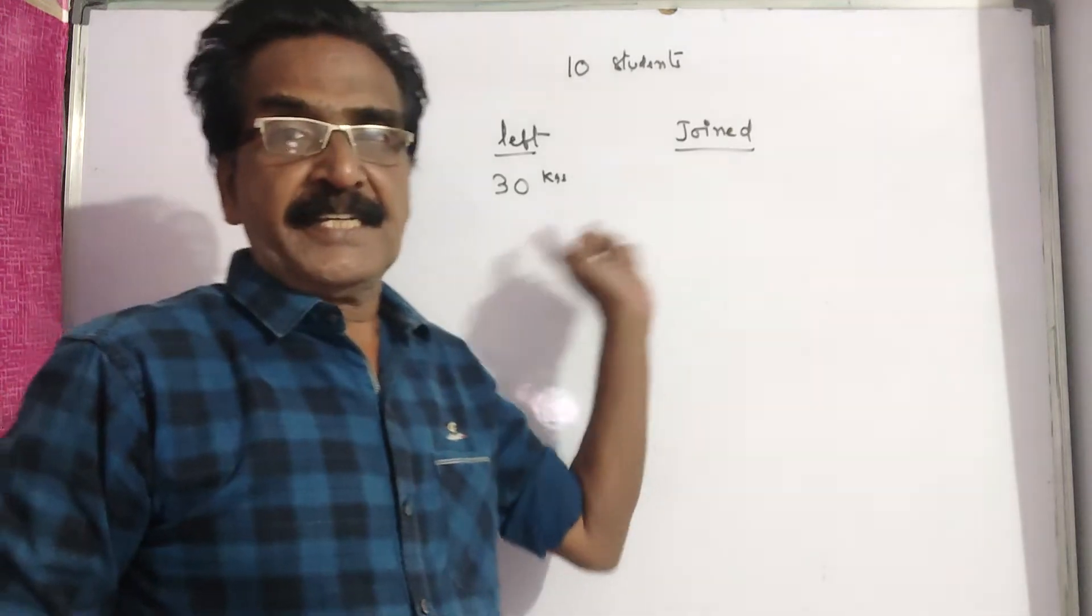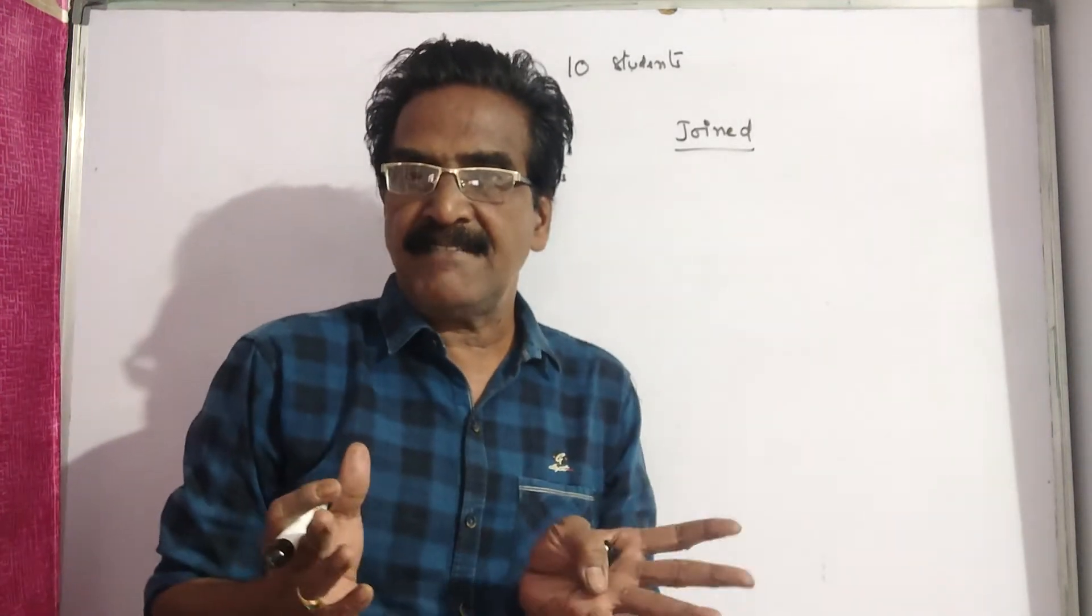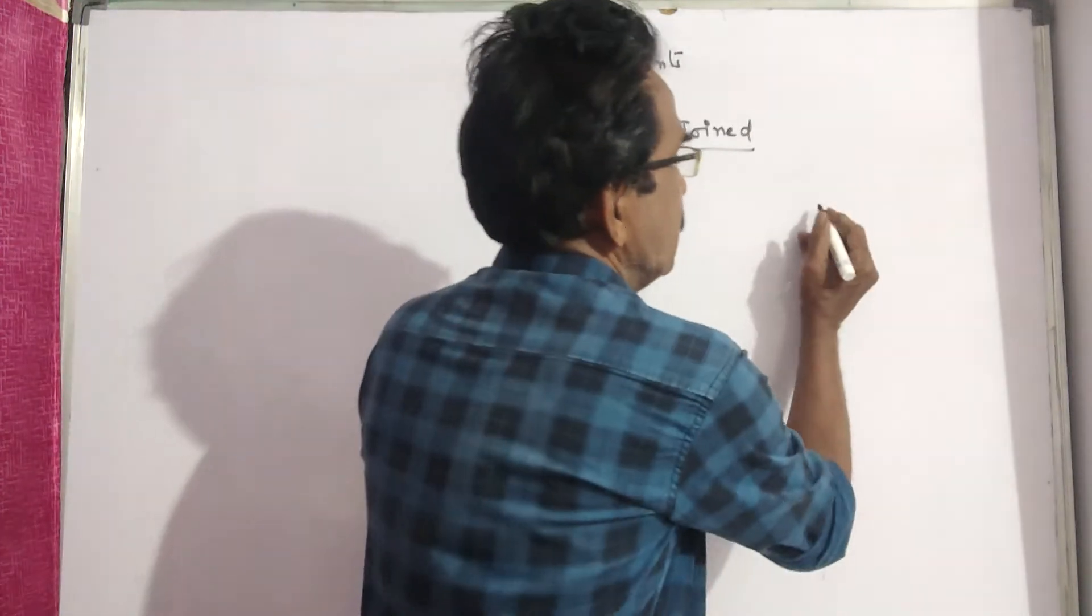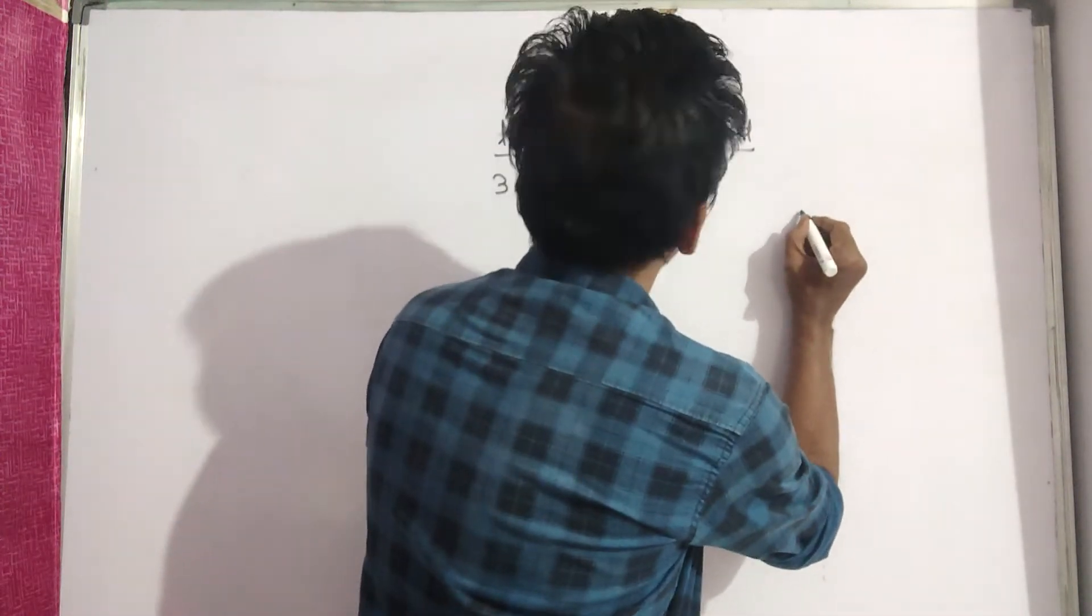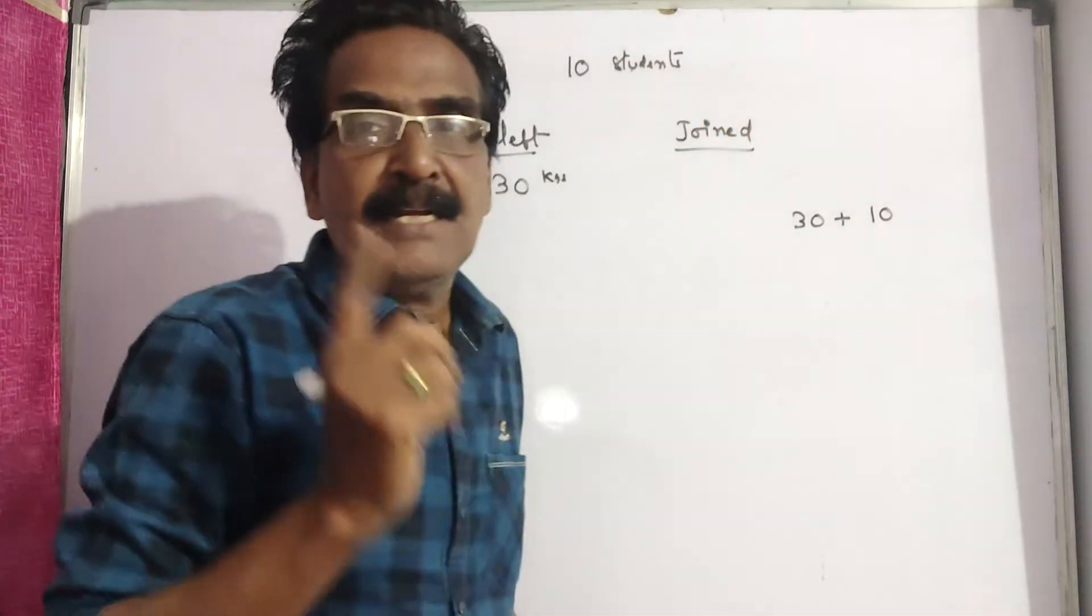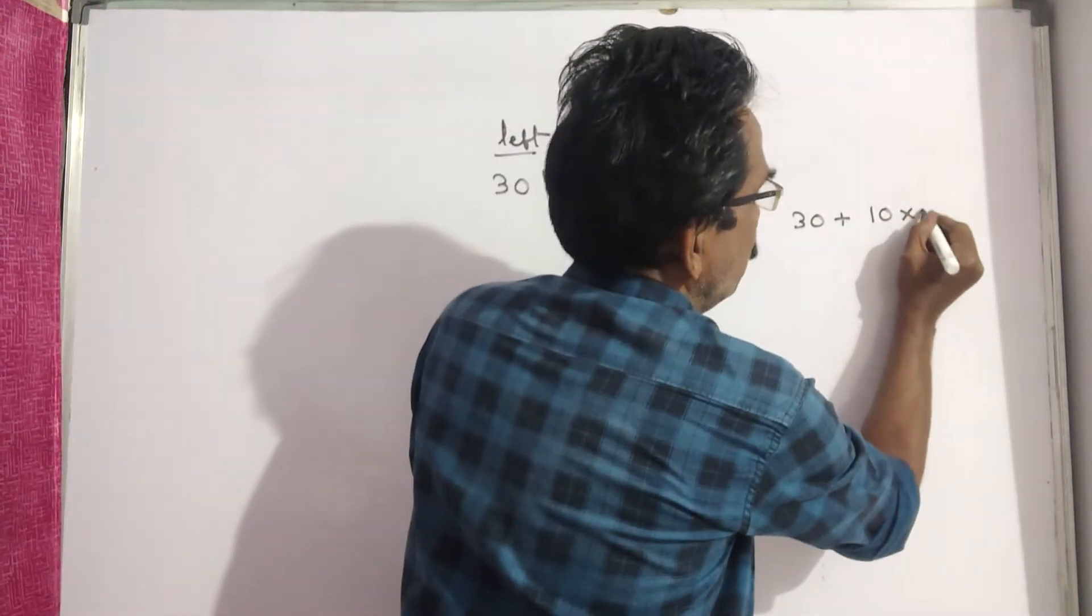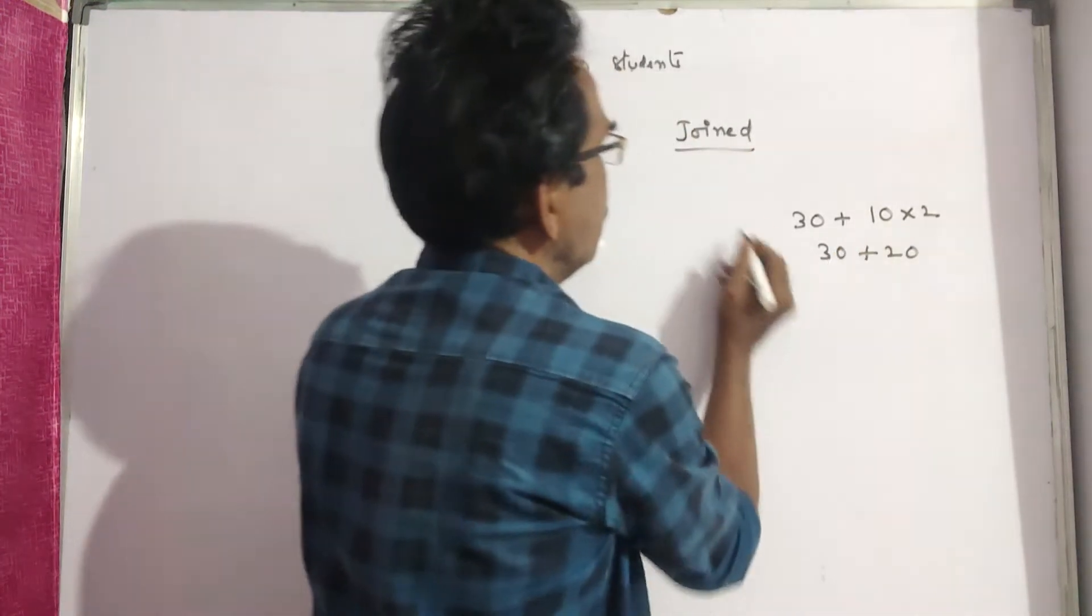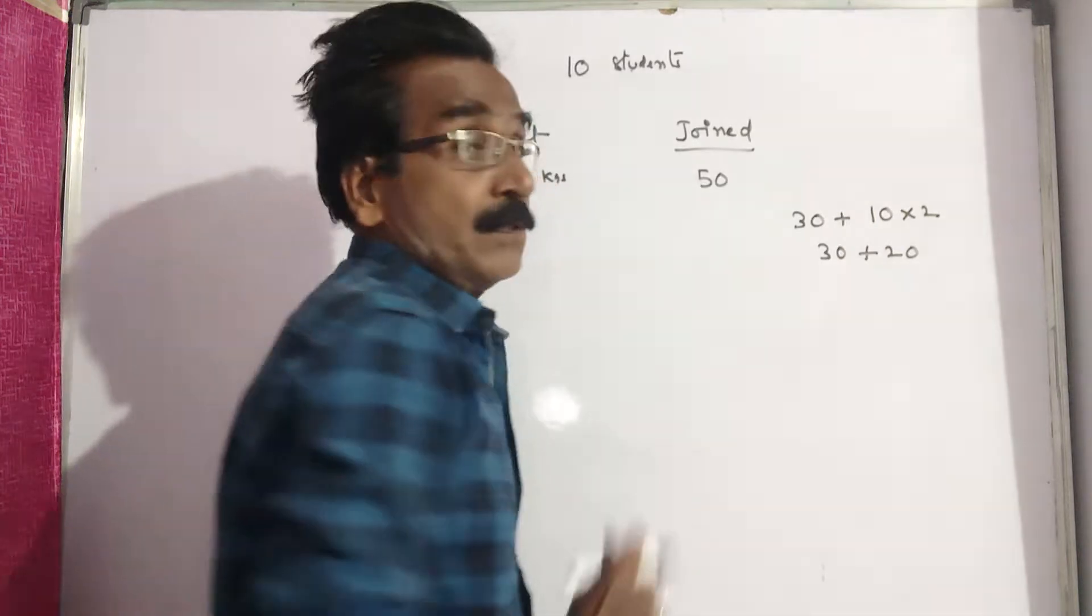With this change, the average weight of the group is increased by 2 kgs. So the new person must be 30 plus average increased by 2 kgs. So 10 into 2, 30 plus 20, 50 kgs.